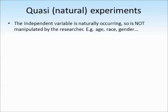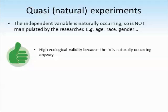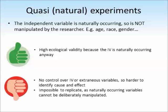The last type of experiment is a quasi-experiment, sometimes called a natural experiment. This is where the independent variable is naturally occurring and not manipulated by the researcher — things like different ages, different races, or genders. These have very high ecological validity because the IV is naturally occurring. However, because there's no control over the independent variable or any other extraneous variables, it's much harder to identify cause and effect. It's also next to impossible to replicate because these naturally occurring variables cannot be deliberately manipulated.